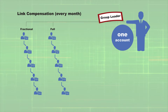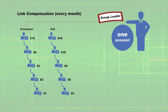By recruiting promoters under your downline, your monthly compensation is calculated on the purchase of link chains for all contracts. You get paid down to five levels. The compensation for your downline fractional contracts: first level $12, second level $6, third level $3, fourth level $2, and fifth level $1. The compensation for your downline full contracts: first level $36, second level $18, third level $9, fourth level $6, and fifth level $3.